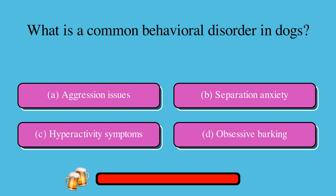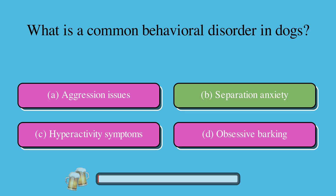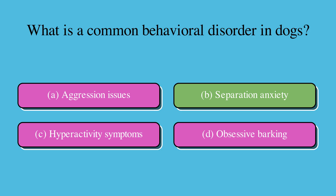What is a common behavioral disorder in dogs? A. Aggression issues, B. Separation anxiety, C. Hyperactivity symptoms, or D. Obsessive barking. The correct answer is B. Separation anxiety.